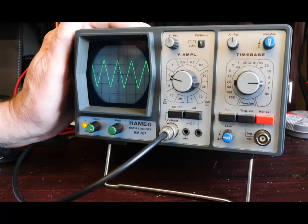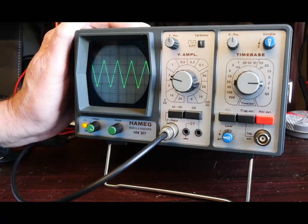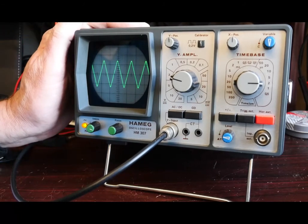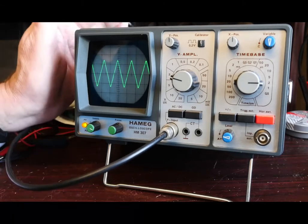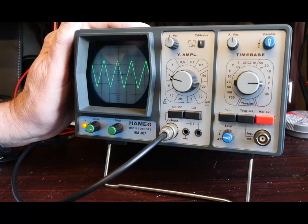So here is the Hameg HM307 oscilloscope. I'll talk you through a few of the things on the front panel and give you an idea of what it's capable of. It's actually quite a nice, tidy example of an oscilloscope. If you look on radiomuseum.org, it gives a possible year of manufacture of about 1979.